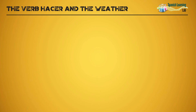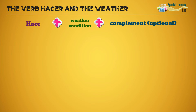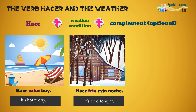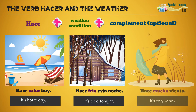The verb hacer and the weather. Another common way of talking about the weather in Spanish is using hace, which comes from the verb hacer — to do — plus a weather condition such as calor, frío, viento, or others. For example: Hace calor hoy. Hace frío esta noche. Hace mucho viento.